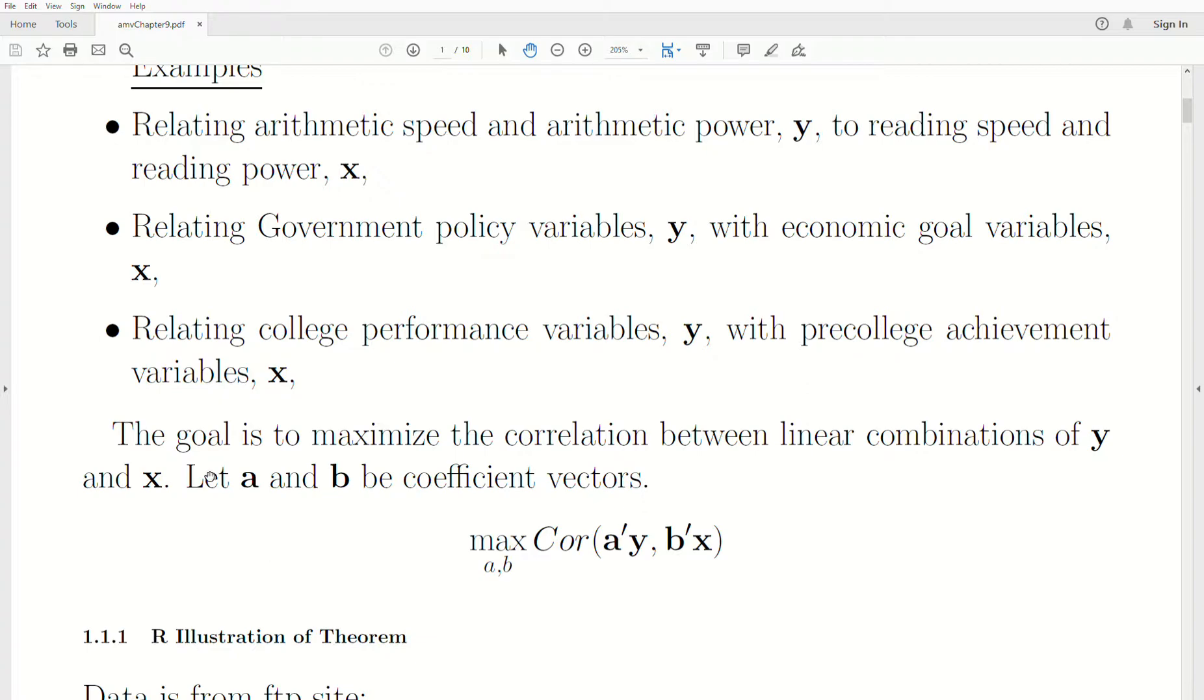And really the goal is to maximize the correlation between linear combinations of Y and linear combinations of X. So if we let A and B coefficient vectors, this is what we want to maximize. The correlation between a linear combination of the Y's and a linear combination of the X's.